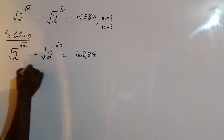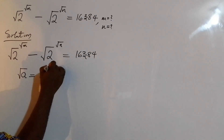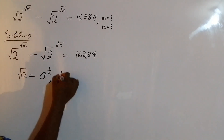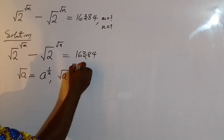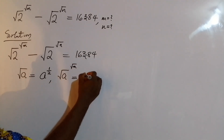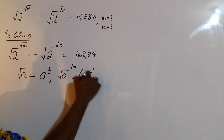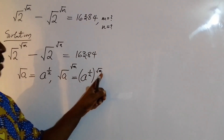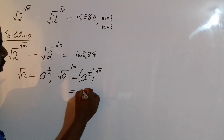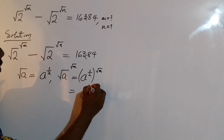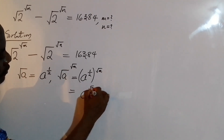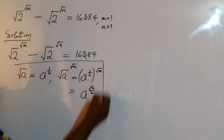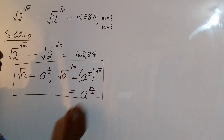If I have root a, this is the same as a to the power of 1/2. That means root a to the power of root n equals a to the power of 1/2 multiplied by root n, which further gives a to the power of root n over 2. I'm going to apply this law to the question at hand.